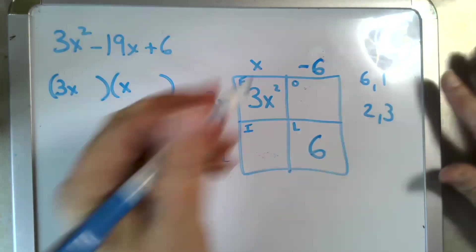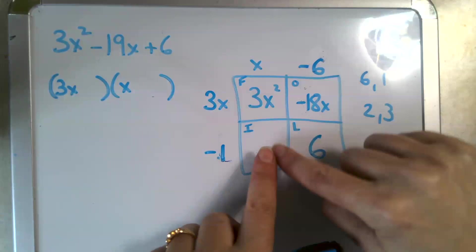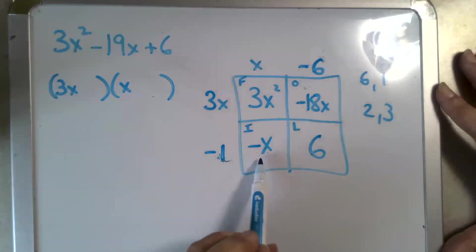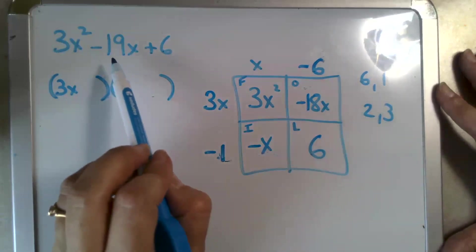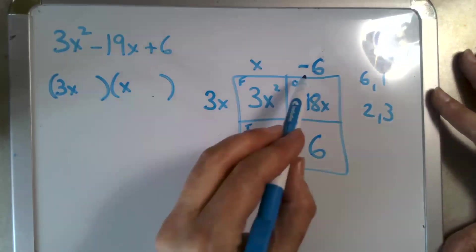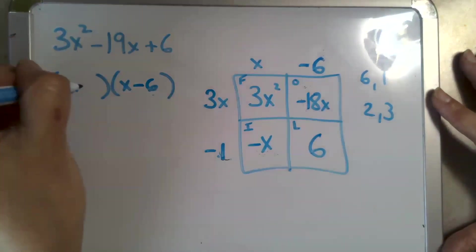3x times -6 gives -18x, and -1 times x gives -x. We've done it! Negative x plus negative 18x adds up to -19x. So the factors are (x - 6) and (3x - 1).